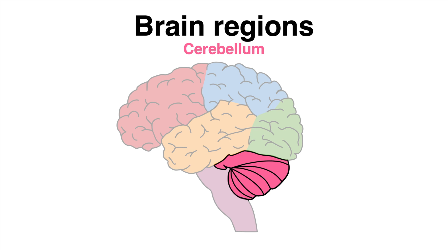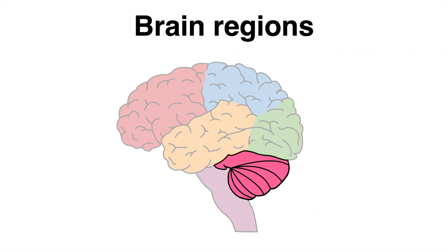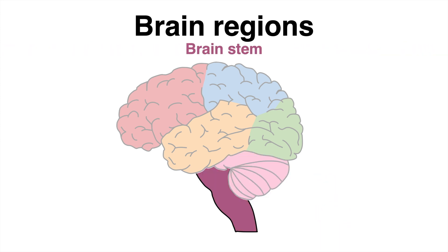Neurons in the cerebellum assure balance and coordination. The cerebellum is also important for motor learning.